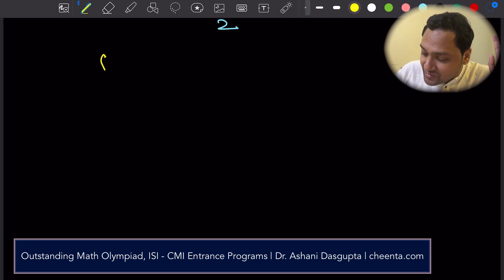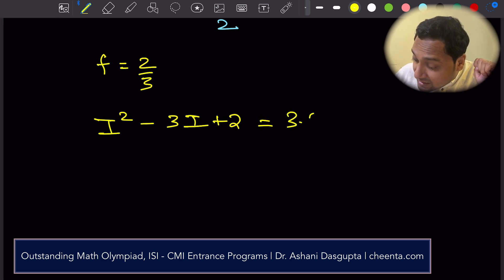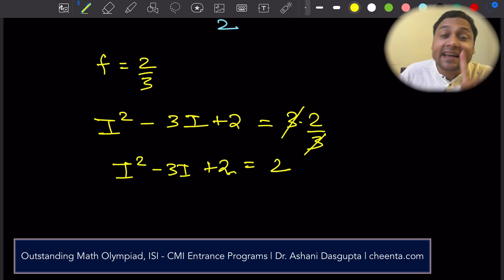The final case f is equal to 2 over 3. So i squared minus 3i plus 2 is equal to 3 times 2 over 3, which is 2. Now I'll give you a challenge problem. Use this particular case and tell me what are the possible values of i and what are the possible values of x. Remember, to find x, you have to add the fractional part to i, right?